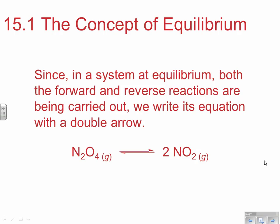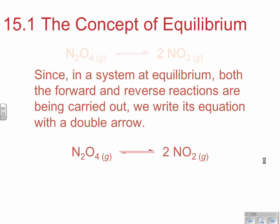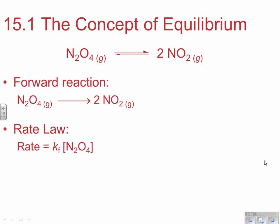Since in a system at equilibrium both forward and reverse rates are carried out, we write the equation with a double arrow. In every instance in this chapter when talking about reactions, we use double arrows to imply that N2O4 is making two NO2s and two NO2s are reacting back to make N2O4 — denoting reversibility. If the forward reaction is N2O4 making two NO2s and this is an elementary step, the rate law is rate = kF[N2O4]. That's the lowercase k rate constant from last chapter. For the unimolecular elementary reaction, it would be first order.